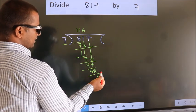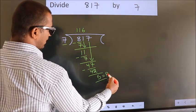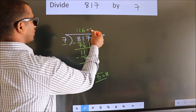No more numbers to bring down. So we stop here. This is our remainder. This is our quotient.